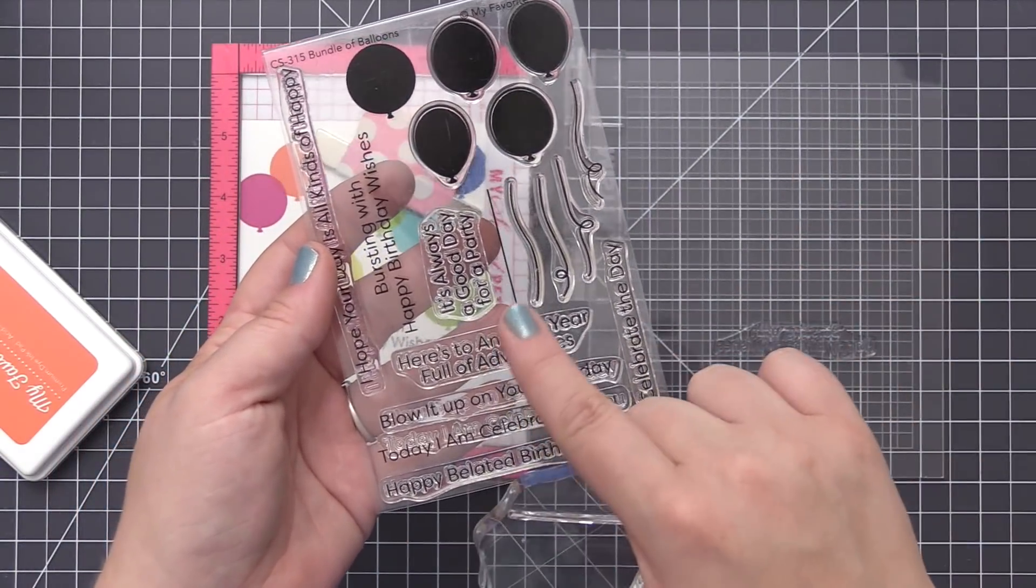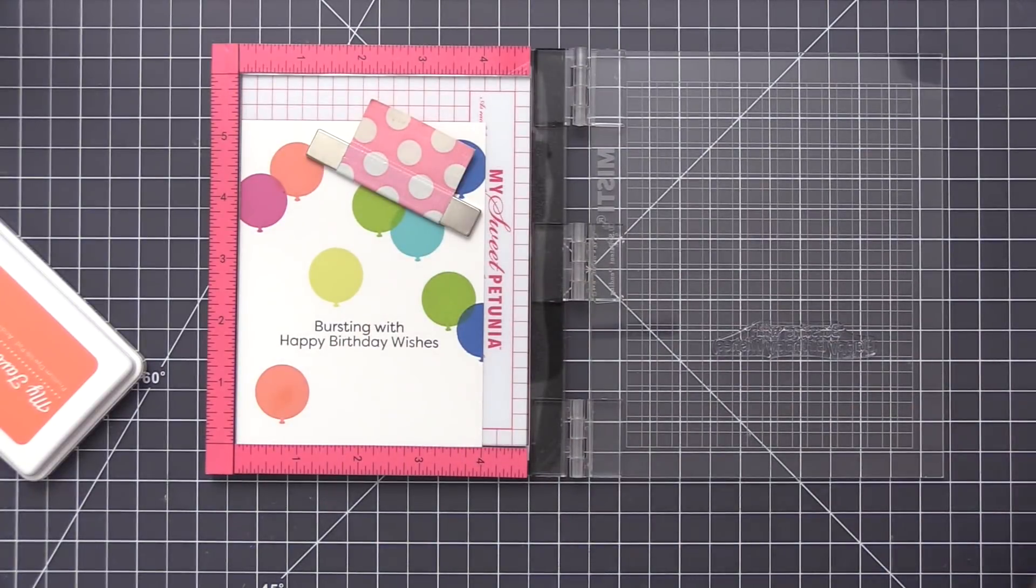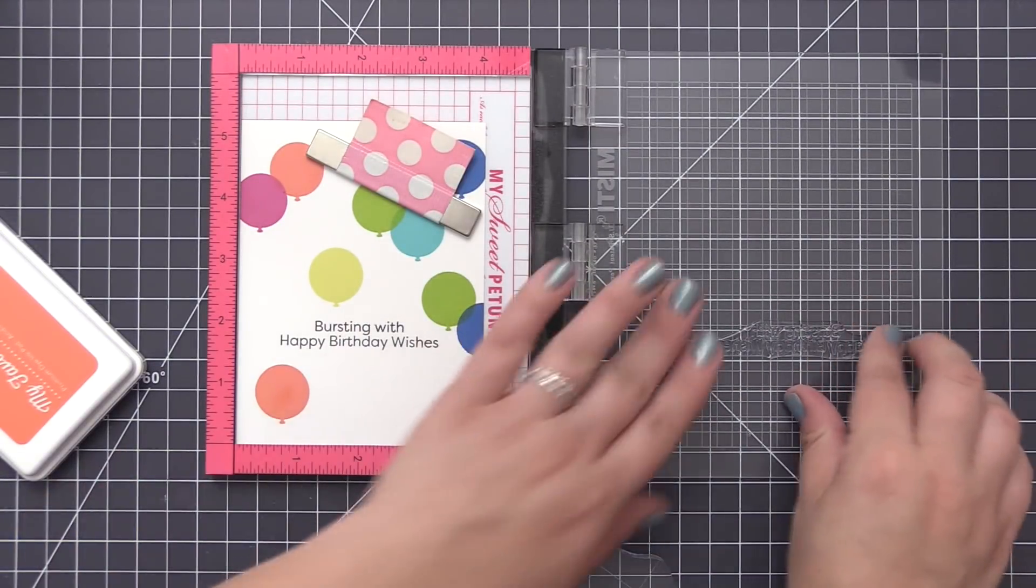For the sentiment, I just stamped that with black licorice dye ink right in the center area there, and now we're going to add all of the balloon strings.